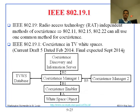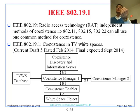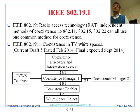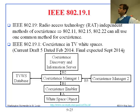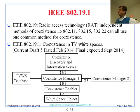IEEE set up committee 802.19 to solve the coexistence problem — it started when 802.11 and 802.15 both started using 2.4 GHz (Wi-Fi and Bluetooth). These are called RAT-independent solutions, meaning they work for any radio access technology. Subgroup 802.19.1 works specifically on white space coexistence. It is not finalized yet — draft 5 is from February 2014, with final expected in September 2014.